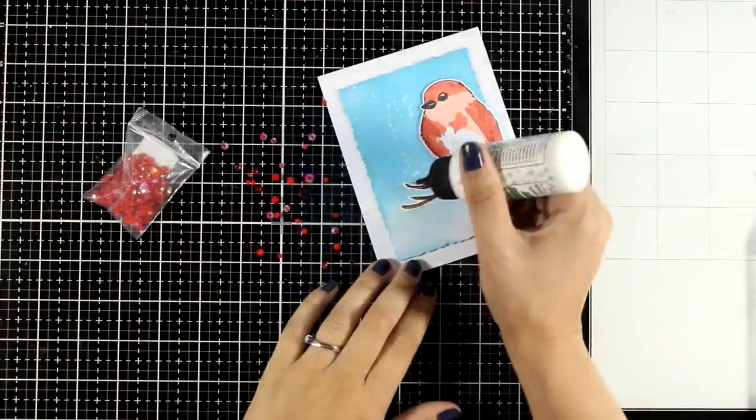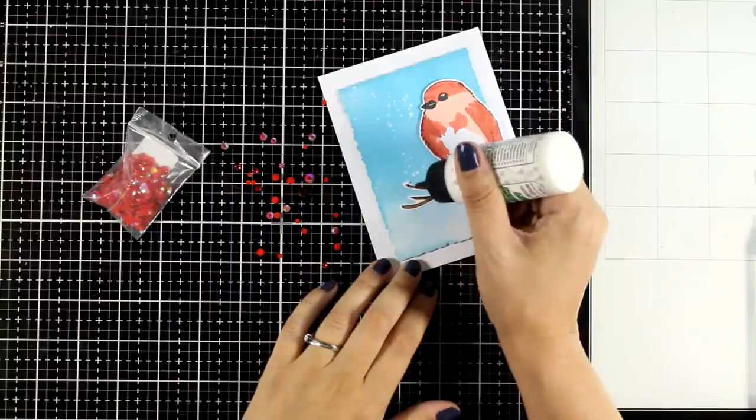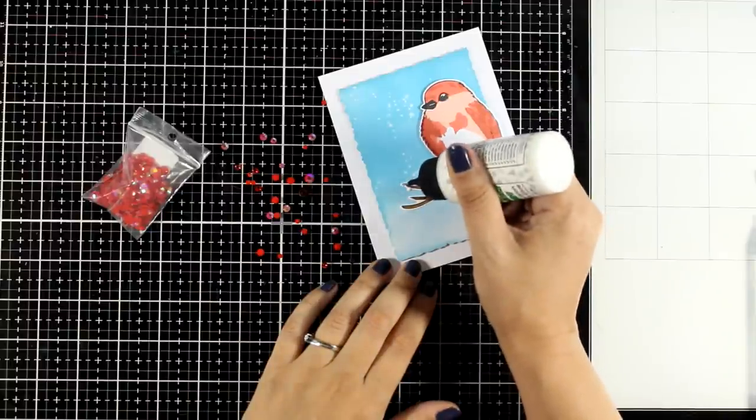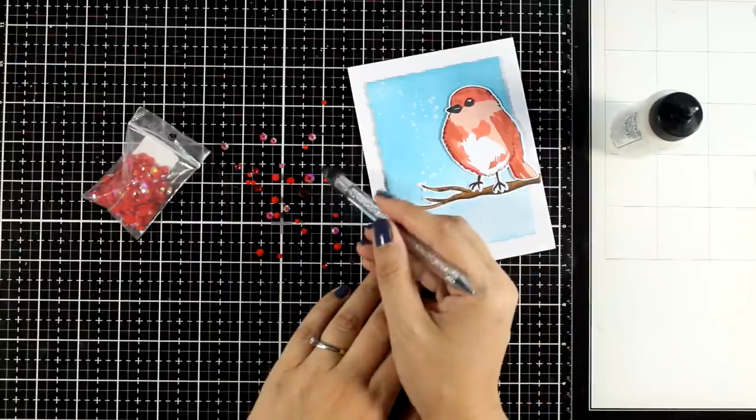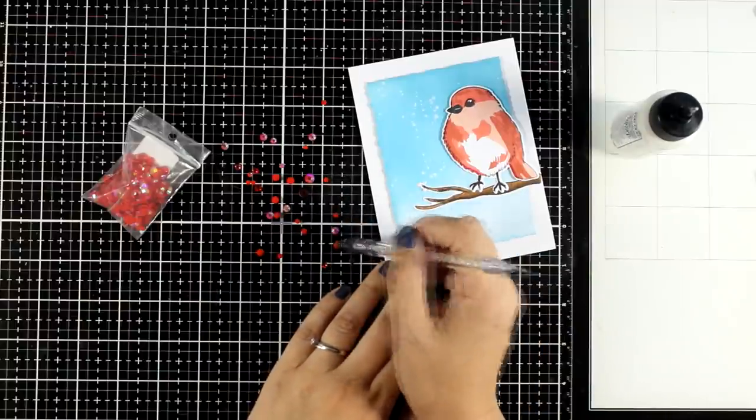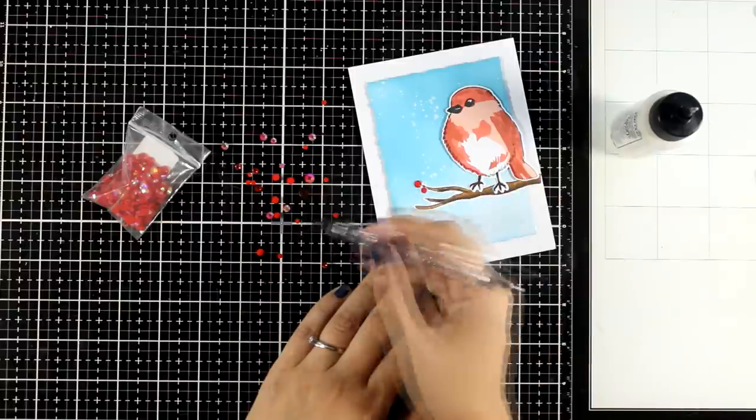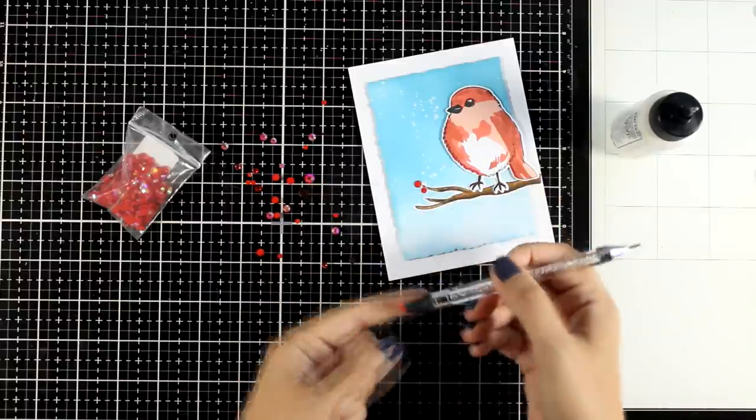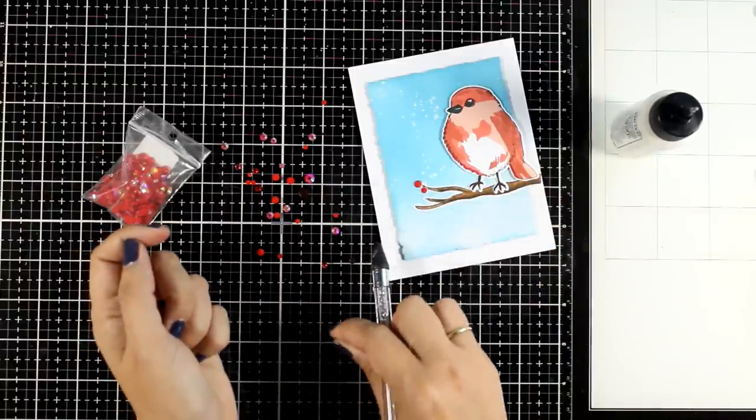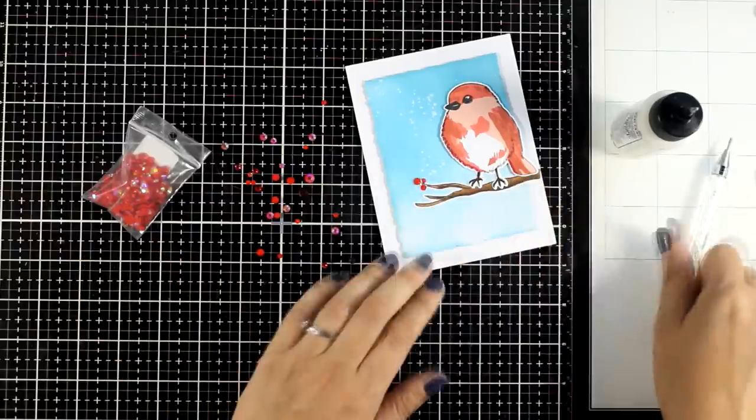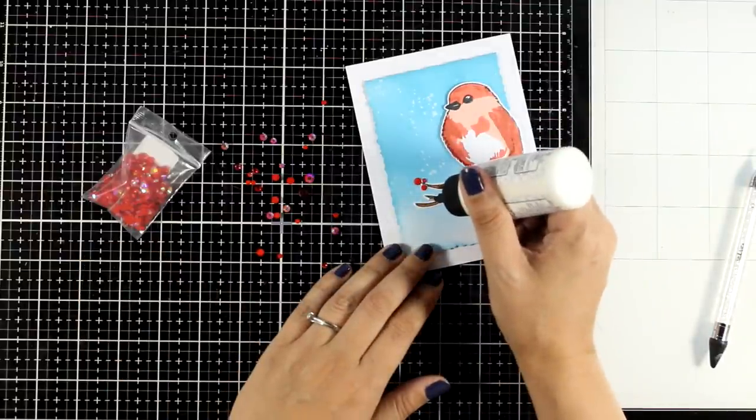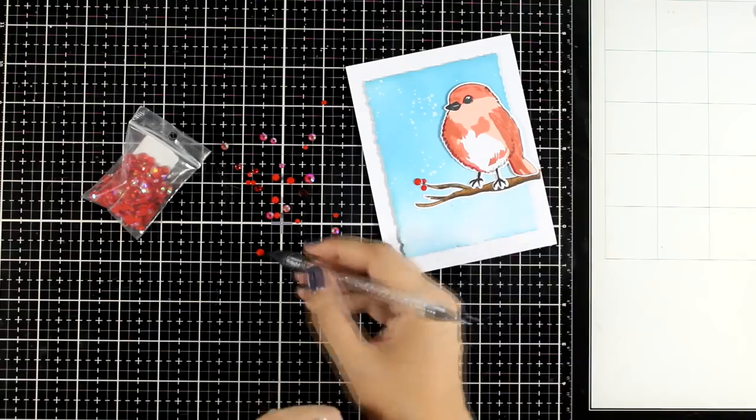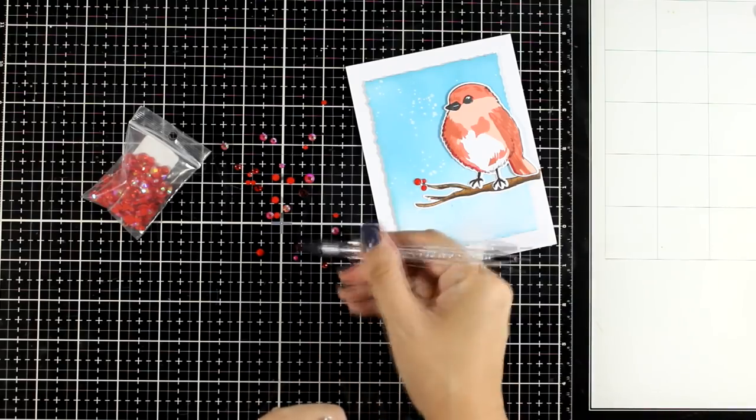And since I'm going for a winter card I'm going to add some embellishments. On the branch I'm going to add some red gems. Which are going to work as red berries and they are going to give a more festive look on my card. Switch it up, you can add white or red gems to have a holly berry or a mistletoe. Or add leaves and flowers for a completely different look and season.